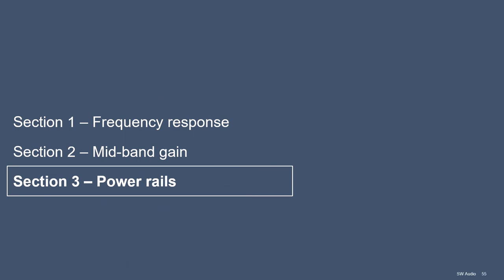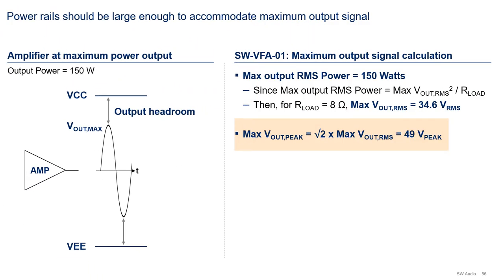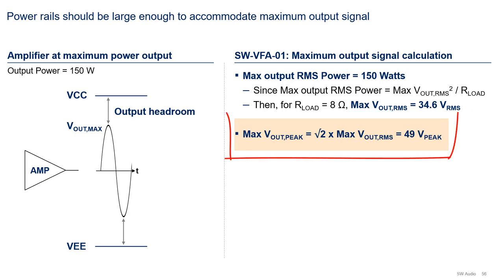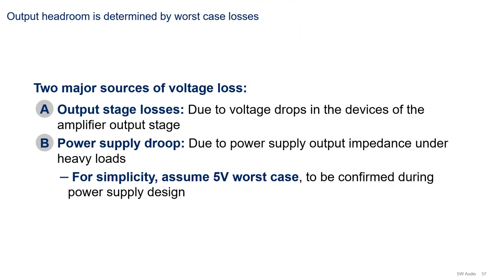Now let's discuss the value of the power rails. The amplifier power rails should be large enough to accommodate the amplifier's maximum output signal swing and provide enough output headroom to prevent signal compression during maximum power operation. The output signal under maximum output power conditions will be 34.6 volts RMS. To get the peak value, we multiply the RMS value by the square root of 2, resulting in 49 volts peak. Output headroom is determined by the voltage losses during maximum output power operation.